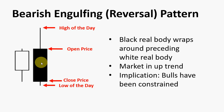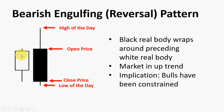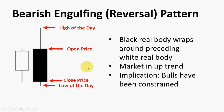Similarly, this is a bearish engulfing candle, which is also a reversal pattern. We have this black body here, formed after a bullish candle and much bigger — it actually overpowers or swallows the previous bullish candle, giving us a reversal pattern. What does that mean for the market? It means that the bulls have been stopped in their tracks. The bulls in the market have been stopped and this candle signifies that the bears are now in charge — they're in control.